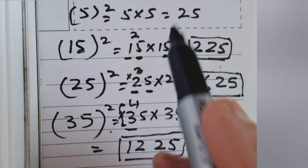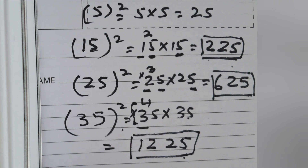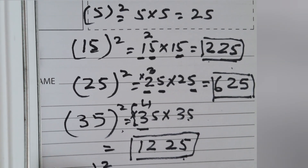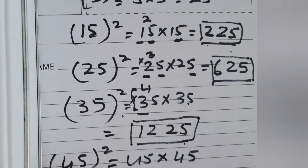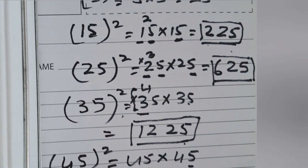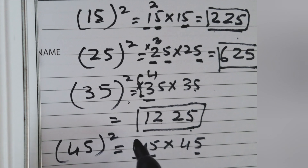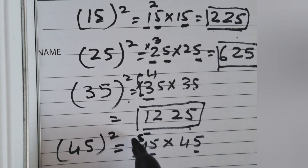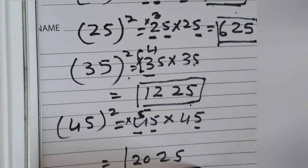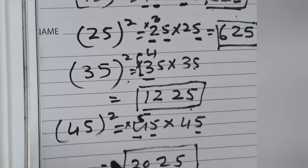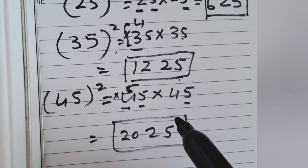One more example: after 35 comes 45. We can use this formula for any number ending with 5. The square of 45 means 45 multiplied by 45. First, 5 times 5 is 25. Then multiply 4 by the next number after it — the next number after 4 is 5 — so 4 times 5 is 20. The answer is 2025. This formula is very quick and you can calculate it in your mind, saving a lot of time in exams.